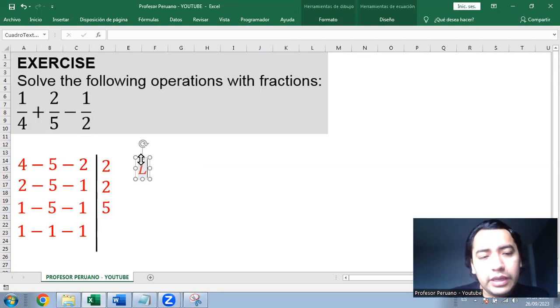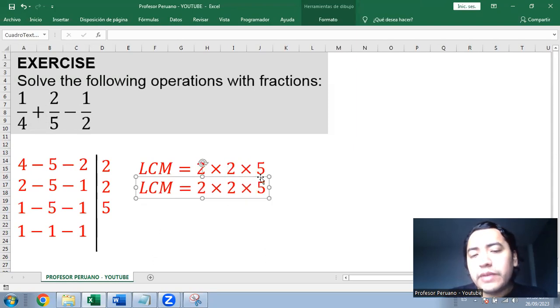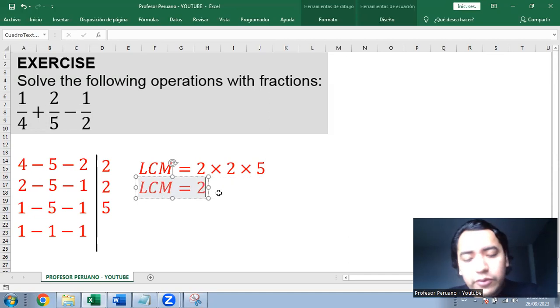Now the least common multiple is going to be the multiplication of all those factors. So we have to multiply 2 times 2 times 5. 2 times 2 is 4 times 5 is 20. So that's the least common multiple.